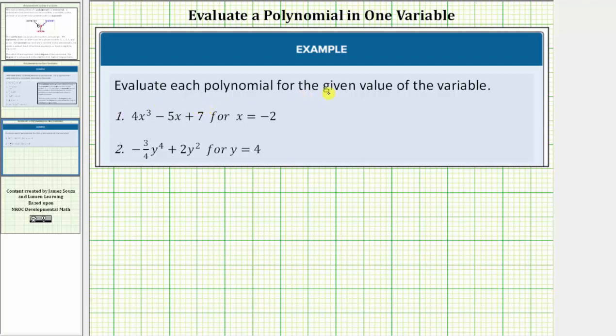We're asked to evaluate each polynomial for the given value of the variable. Number one, we have four x cubed minus five x plus seven for x equals negative two.